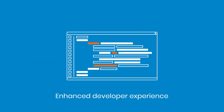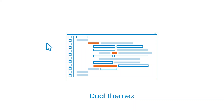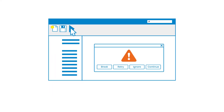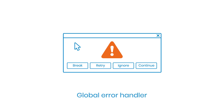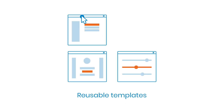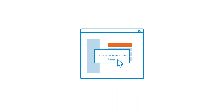UiPath 2018.4 provides an enhanced experience for developers. There are dark and light product themes available, dynamic error handling with Global Error Handler, as well as higher developer productivity with reusable templates.